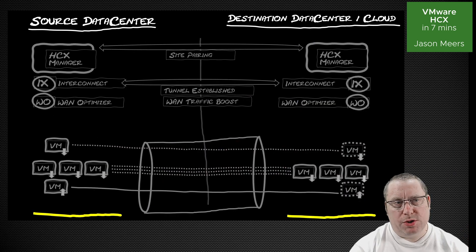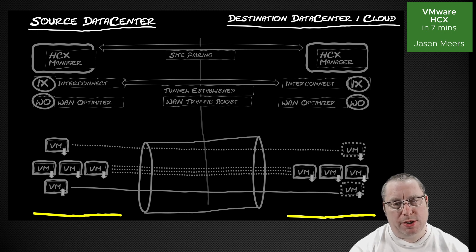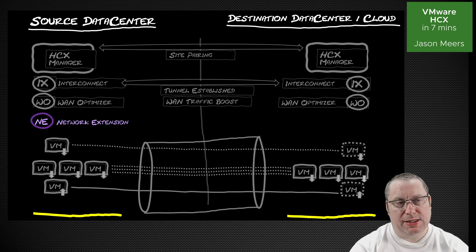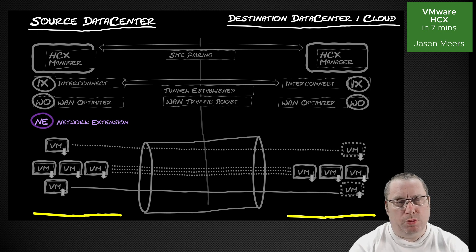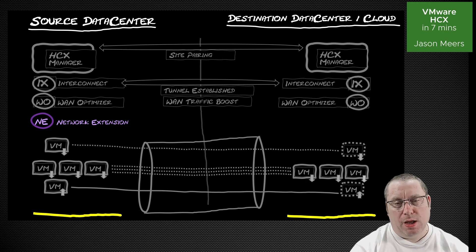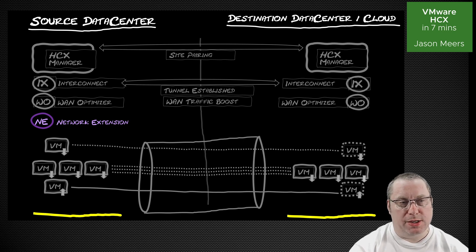Now I'm going to move on to a slightly different topic. Everything drawn before I've now shown in gray so you can tell what's new. We've got the same as before — HCX Manager with an interconnect and optionally a WAN optimizer — plus single cold, bulk cold, and live migrations. The next thing we're going to look at is layer 2 network extension: layer 2 over layer 3. It's basically the ability to run a single network or single layer 2 subnet across both sides, meaning you can migrate virtual machines without having to change the IP address or MAC address.